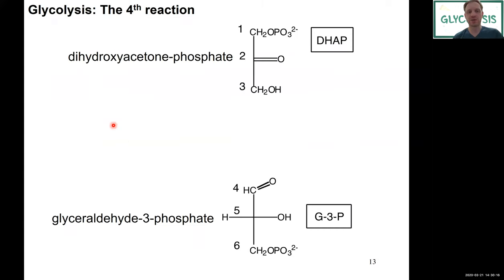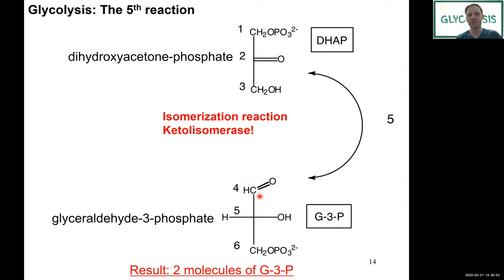The products are DHAP (dihydroxyacetone phosphate) and G3P (glyceraldehyde-3-phosphate) — the two cleavage products of fructose-1,6-bisphosphate. We've split our hexose into two three-carbon products: DHAP has a ketone function and G3P has an aldehyde. Using another ketol isomerase specific to these compounds, we can convert DHAP's ketone to an aldehyde — moving the double bond from C2 to C1 — generating two molecules of G3P total.